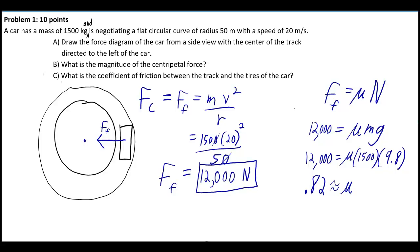A car has a mass of 1,500 kilograms and is negotiating a flat circular curve of radius 50 meters with a speed of 20 meters per second. I've already drawn the force diagram with a side view with the center of the track directed to the left of the car.